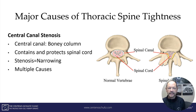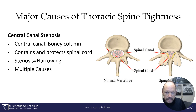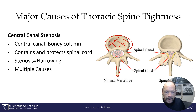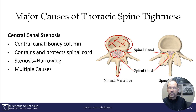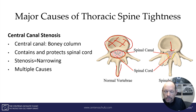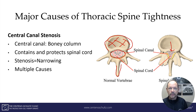The next cause is central canal stenosis. The central canal is basically a bony column. As depicted here in cross section — this is the front of the spine and this is the back — this is where the disc sits. The spinal canal houses the spinal cord and spinal fluid. Stenosis simply means narrowing, and narrowing of the central canal does not bode well for the spinal cord or any of the exiting nerve roots. There are many causes of central canal stenosis in the thoracic spine, but they all can lead to significant pain, dysfunction, and tightness.